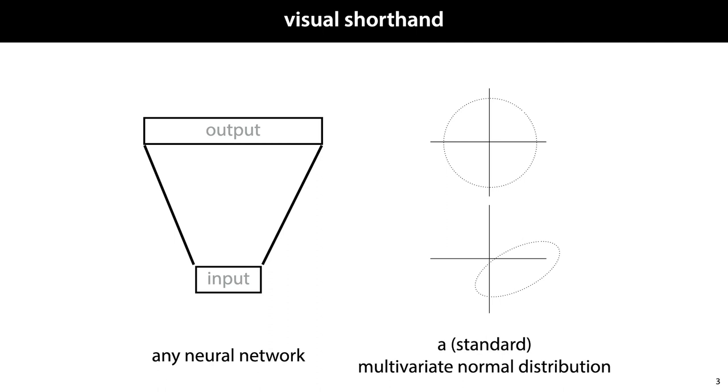And the image on the right represents a multivariate normal distribution. Think of this as a contour line for the density function. We've drawn it in a 2D space, but we'll use it also as a representation for MVNs in higher dimensional spaces. If we're talking about the standard multivariate normal distribution, we'll draw it as a circle around the origin. And if we're talking about a non-standard multivariate normal distribution, we'll draw it as an ellipse somewhere in space.